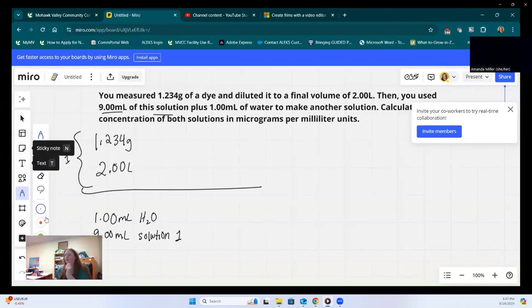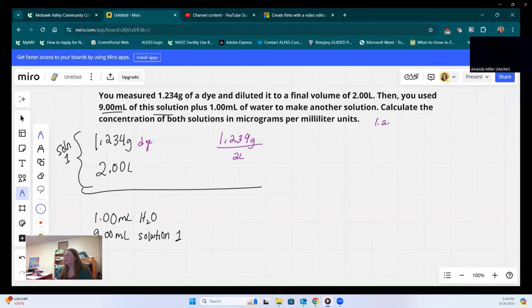The first thing we have to do is calculate the actual concentration of solution one. We have 1.234 grams of dye into two liters of total solution. You can also write this as grams per two liters. We need to understand that the typing version of a fraction really means that I have a numerator and I have a denominator. I can see I need to convert the grams into the unit we're looking for for mass, which is micrograms, and then I need to convert the liters to milliliters.